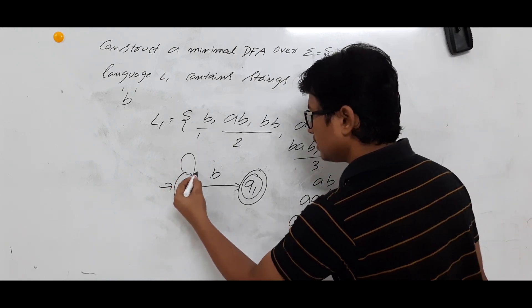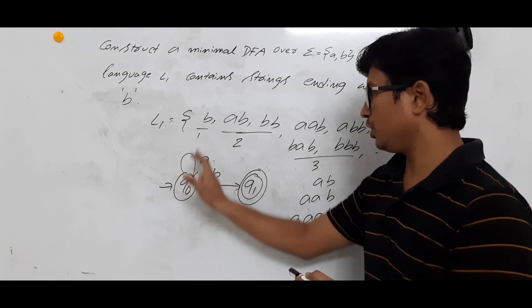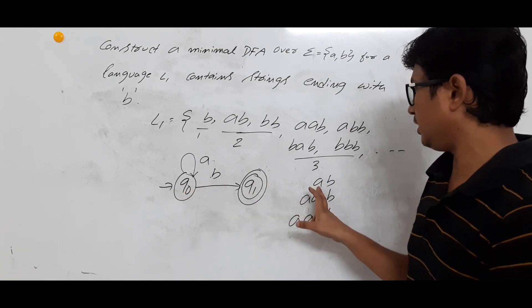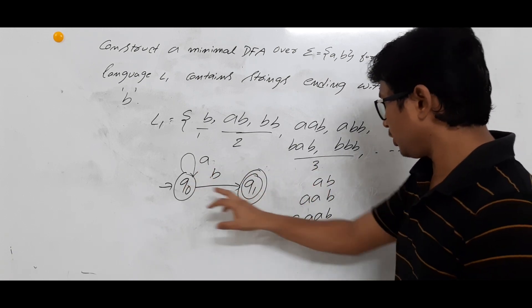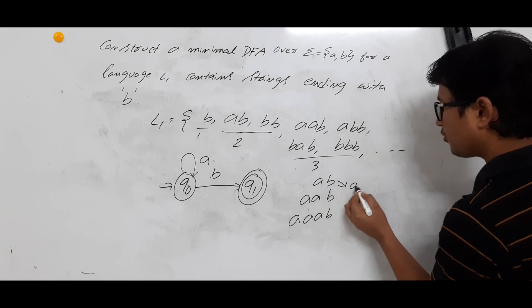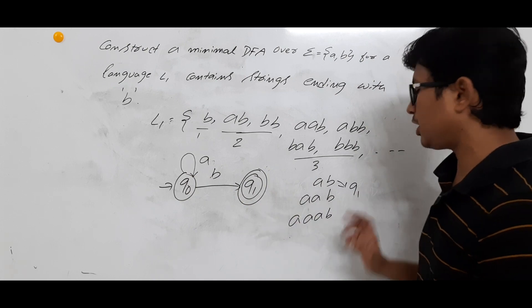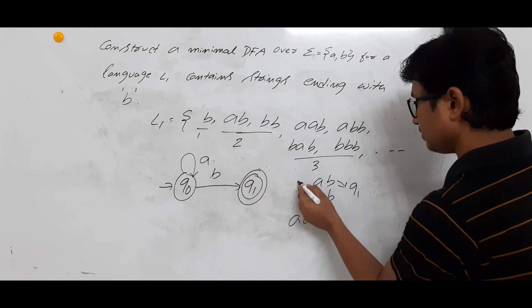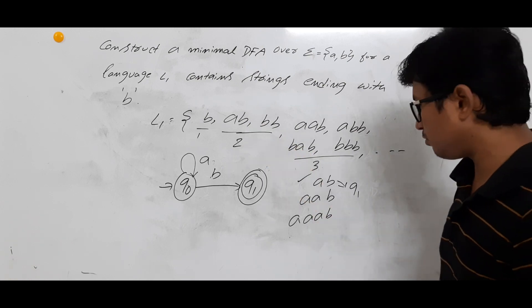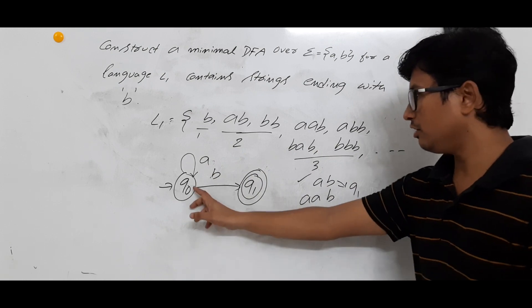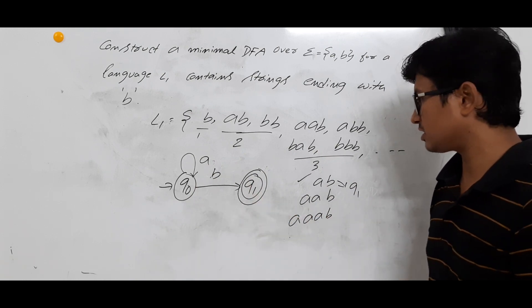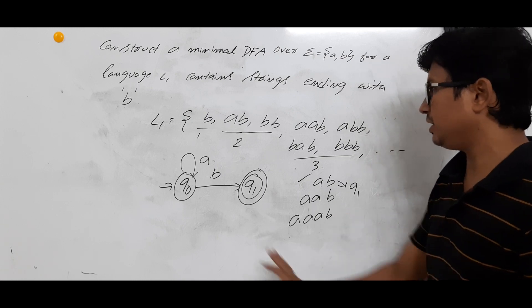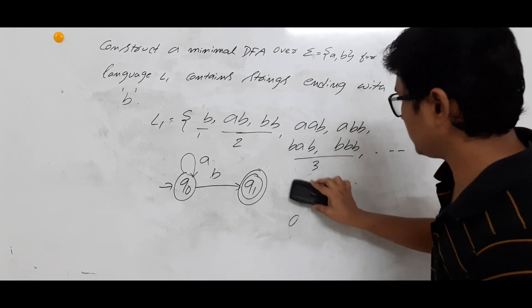From the initial state Q0, on A I go to Q0 itself, and on B I go to Q1. Let's verify: from Q0 on A I go to Q0, then on B I go to Q1 — a final state, so AB is accepted. For AAB: two A's keep me in Q0, then B brings me to Q1 — final state, accepted. So any string starting with any number of A's and ending with B is accepted.